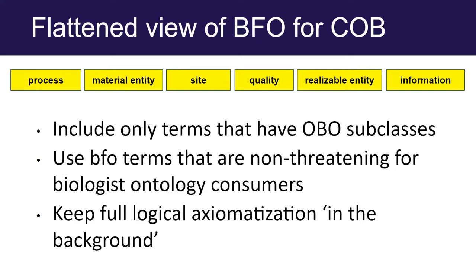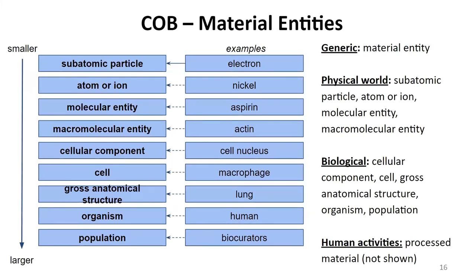As a concrete example, here is the material entity branch of COB. Arguably 'material entity' is still a bit abstract, but one level beneath that you have things that are more recognisable to an ordinary scientist. These are organised by granularity, going all the way from subatomic particle through to populations. Even though this is an upper ontology for biology, there are overlaps with other areas of science, so subatomic particles are included. We've included examples of actual specific terms — nickel, aspirin, actin — that are not actually in COB itself, but just to show how they would be classified.